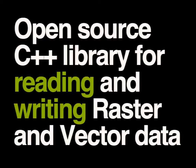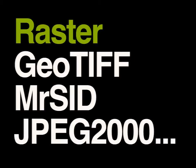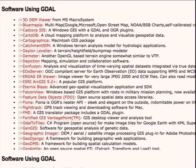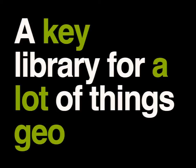If you're not familiar with GDAL, it's a library for reading and writing both raster and vector geospatial data formats. It's C++ and open source, and it's really good at supporting lots of formats — I think it supports over 200 formats. Some of those include raster formats like GeoTIFF, MrSID, JPEG2000, and vector formats like KML, GPX, Shapefile, PostGIS, and a whole bunch of others. It's also used in a variety of applications and is basically a key library for a lot of things geo-related.